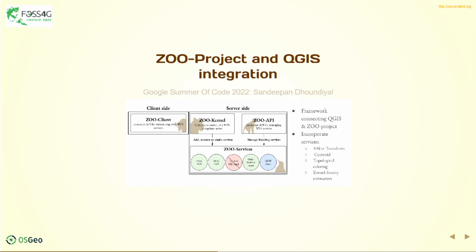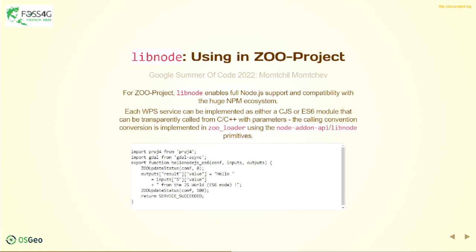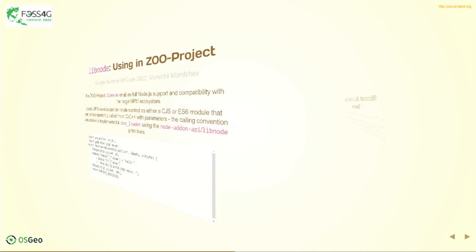This year we were lucky to get three more Google Summer of Code projects. One, done by Sandy Pan, has the goal of making QGIS-based processing available as a first-class process service in the ZOO project world. Another project, by Momchil Marchev, implemented support for Node.js within the ZOO kernel, meaning you can implement your services in CommonJS or ES6 and run them as traditional WPS or OGC API Processes.